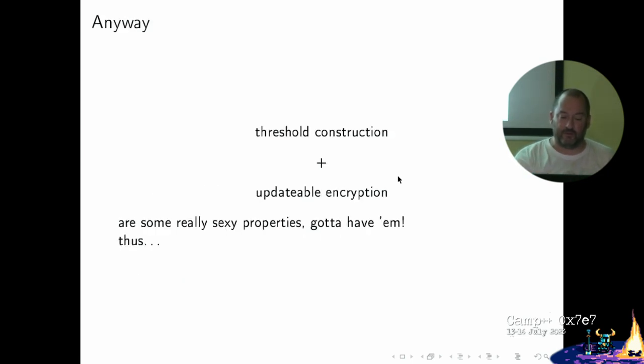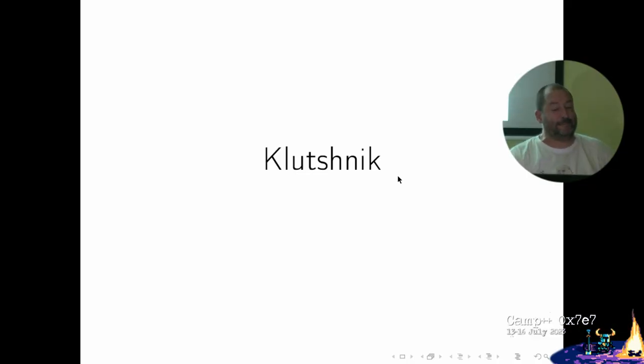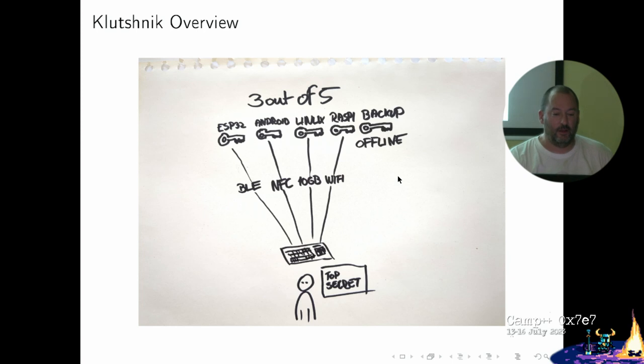This threshold construction and updatable encryption is something that really makes me excited. I implemented this paper. The base system I envision is something like a 3-out-of-5 scheme: you have 5 shares of your key, out of which you need at least 3 to do anything useful. So any attacker needs to compromise 3 of 5 shares.